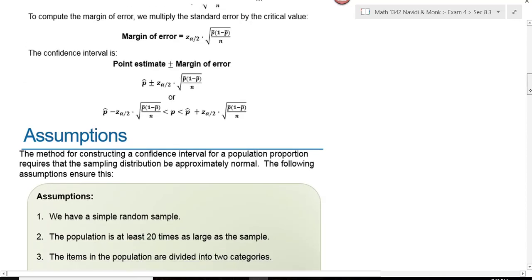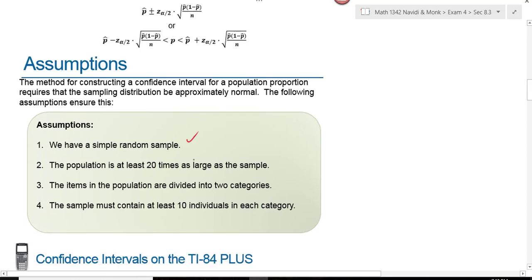The assumptions that we have to make: we have a simple random sample, the population has to be at least 20 times as large as the sample, the items in the population are divided into two categories, success and failure.